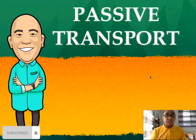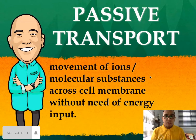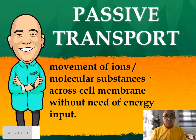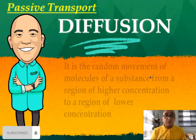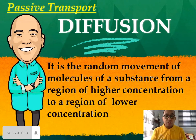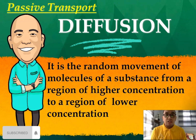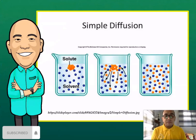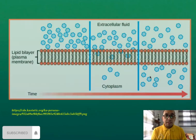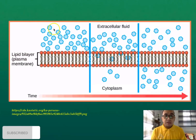Let's now discuss the first type of transport — passive transport. This is the movement of ions and molecular substances across the cell membrane without the need of energy input. The first subtype is simple diffusion: the random movement of molecules from a region of higher concentration to a region of lower concentration, as shown in this illustration, until they reach equilibrium.